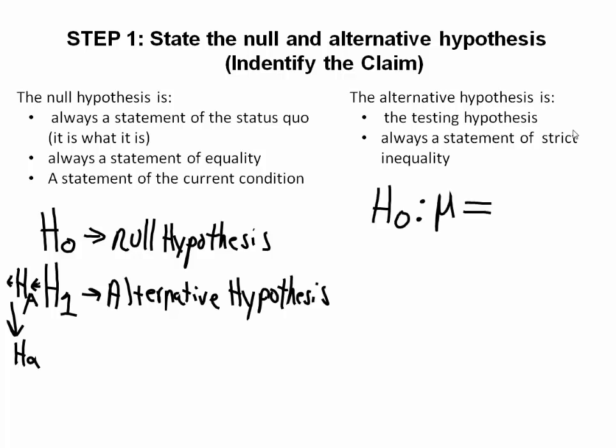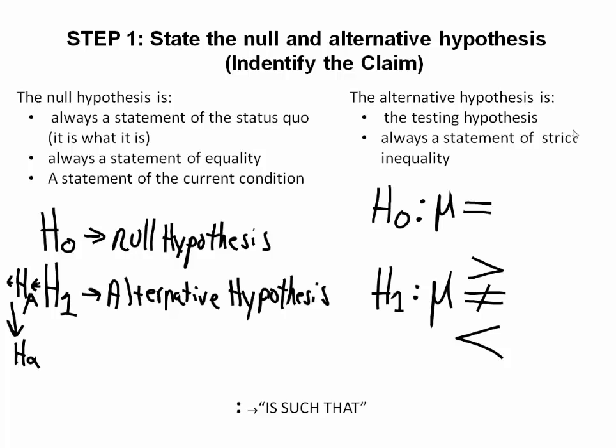When we write our statement of hypothesis, we write them in pairs. The null hypothesis states that the mean — or whatever parameter we're dealing with — is equal to some value. Whereas with our alternative hypothesis, we write that the mean is either greater than, not equal to, or less than some value. In this way, we always have a statement of inequality in opposition to our null hypothesis, which is a statement of equality.